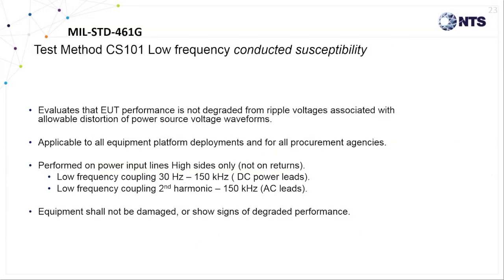The next test we'll discuss is CS101. This is the first conductive susceptibility type evaluation which exposes the EUT to strong harmonic and ripple voltages coupled to its input power lines while watching for signs of degraded performance inside the EUT. This is applicable to both AC and DC lines for all DoD platform installations.